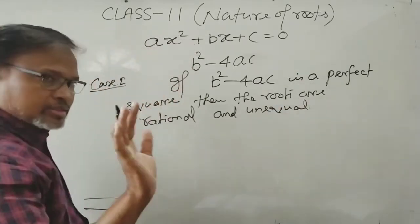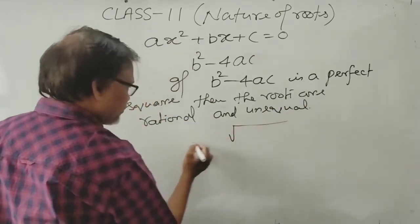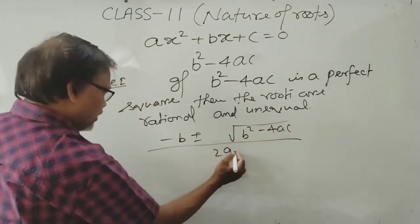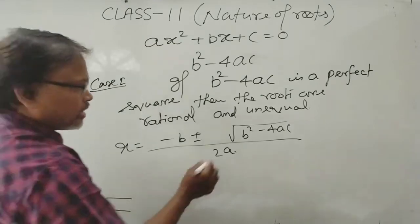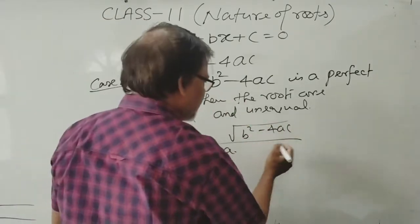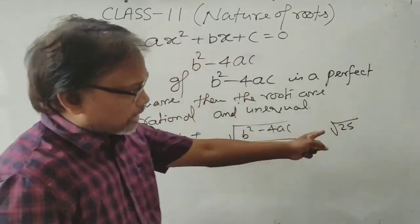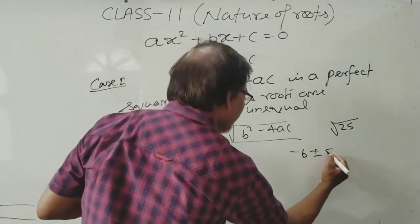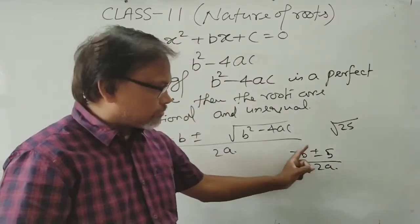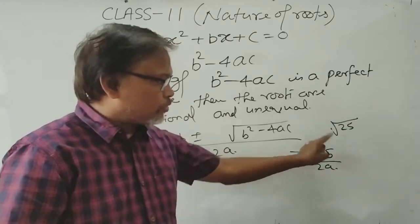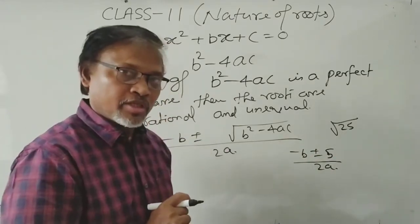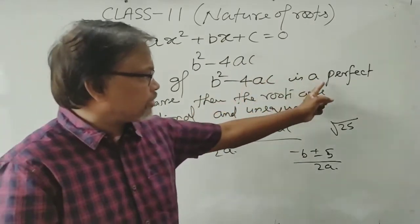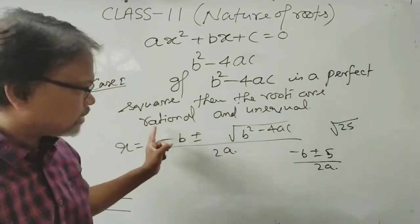For example, using the formula x = (−B ± √(B²−4AC)) / 2A — if you get 25 inside the square root, then √25 = 5, so you get (−B ± 5) / 2A. You get one value with the plus sign and another with the minus sign, and both are rational, not irrational. So if the discriminant is a perfect square, the roots are rational and unequal.